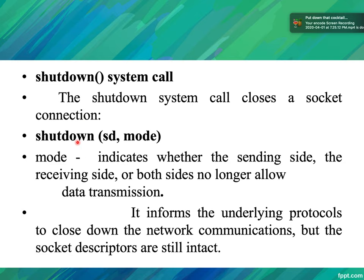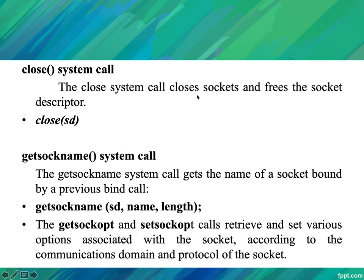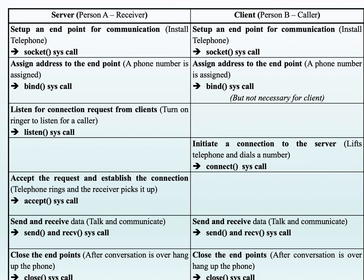Once communication is done, the connection can be shut down or closed. The shutdown system call — shutdown(sd, mode) — completely removes the socket, where mode indicates whether the sending side, receiving side, or both sides are no longer allowed transmission. The close system call closes the socket and frees the socket descriptor so it may be reused by another process. The getsockname system call can be used if the socket name is not known.